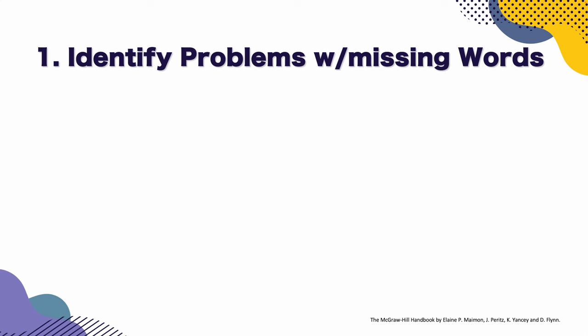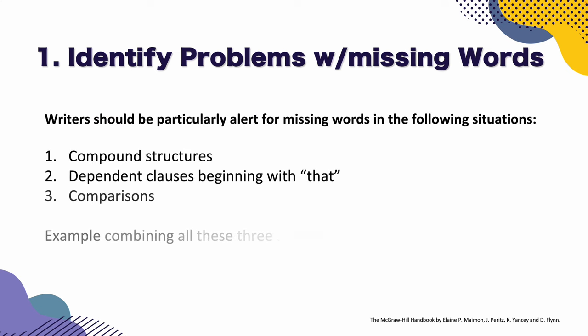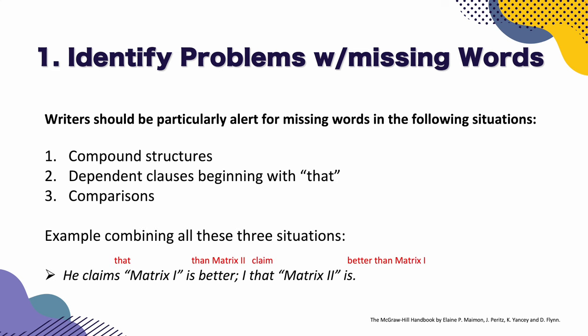Identify problems with missing words. Writers should be particularly alert for missing words in the following situations: compound structures, dependent clauses beginning with 'that', and comparisons. For example, somebody might write: 'He claims matrix 1 is better. I, that matrix 2 is.' There are a lot of words missing here. We should write: 'He claims that matrix 1 is better than matrix 2. I claim that matrix 2 is better than matrix 1.' It makes more sense.